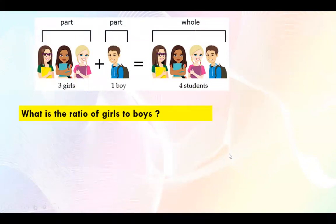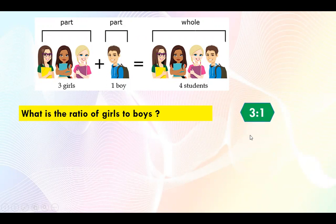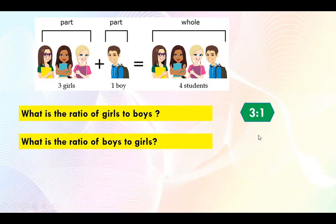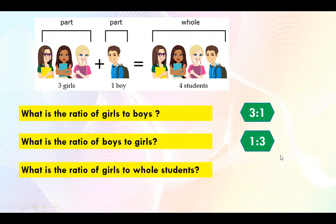What is the ratio of girls to boys? Yes, it is 3 is to 1. What is the ratio of boys to girls? Yes, it is 1 is to 3. Now, what is the ratio of girls to whole students? It is 3 is to 4.